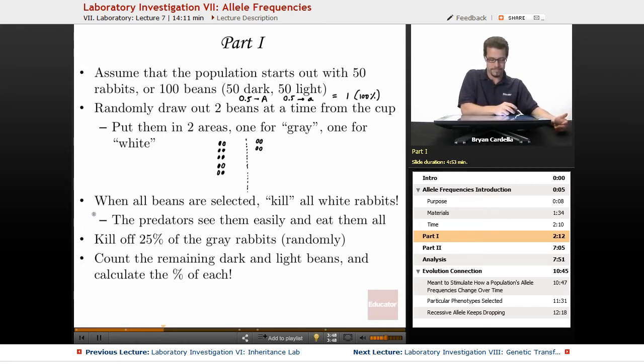When you get to this point, when all the beans are selected, you're going to kill all the white rabbits off. Assume that all of them have died prematurely to the point where they're not going to be able to pass on their alleles to the next generation. The eagles, the hawks, whatever predator, they saw them easily in the terrain and served as a daily lunch for those predators. So these are gone. And let's say for just numbers sake that we ended up having 12 beans here, which is six rabbits that are now gone.